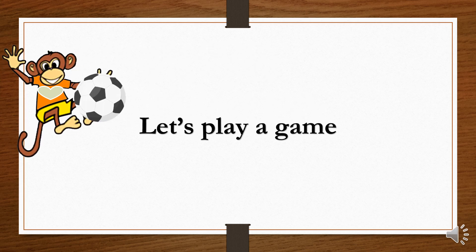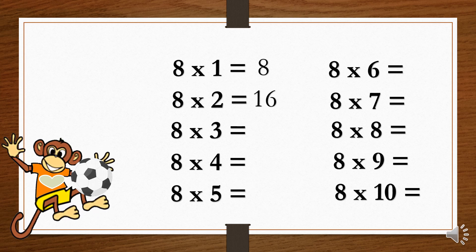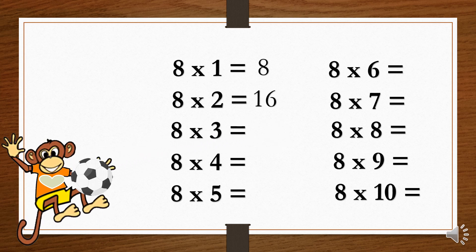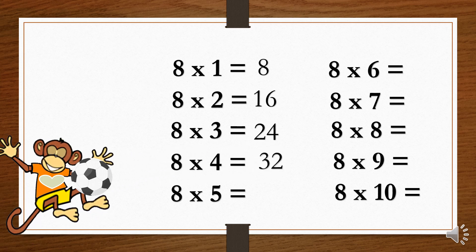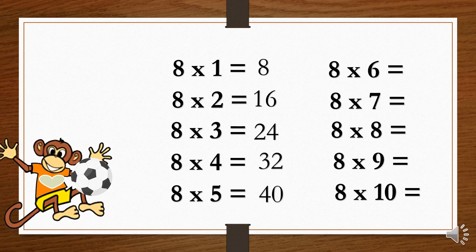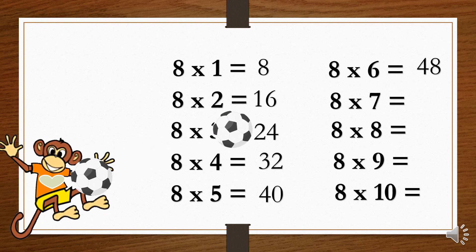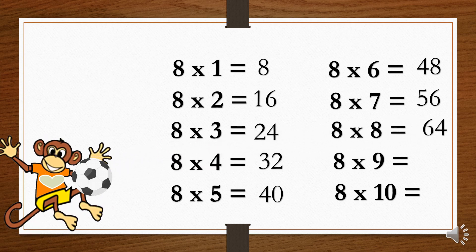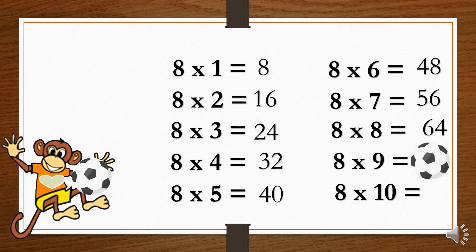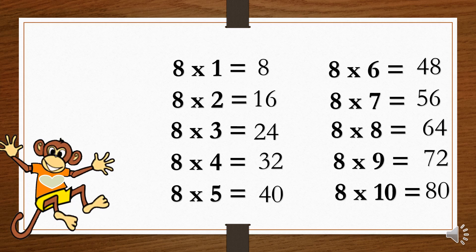Let's play a game. 8×1=8. 8×2=16. 8×3=24. 8×4=32. 8×5=40. 8×6=48. 8×7=56. 8×8=64. 8×9=72. 8×10=80.